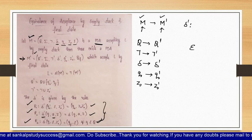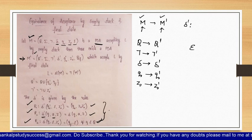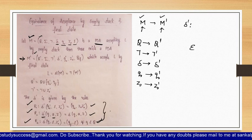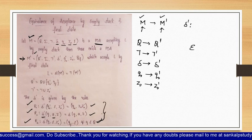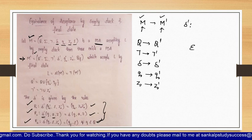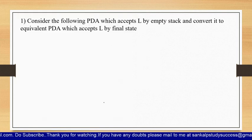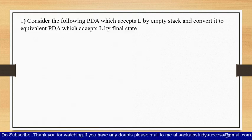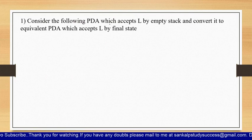For Rule 3, if there is no input symbol — that is, if you have epsilon — then the formula used is: delta-dash of (q, epsilon, Z-naught-dash) equals (QF, epsilon). These are the three rules we are going to use in order to solve problems related to equivalence of acceptance by empty stack and final state. Now let us solve a problem to make this clear.